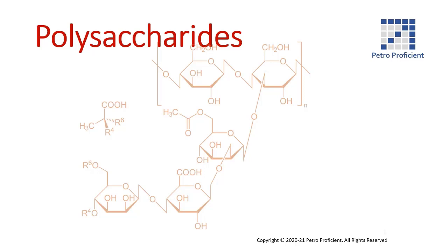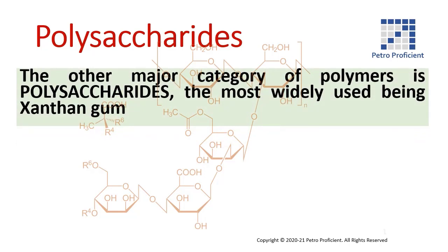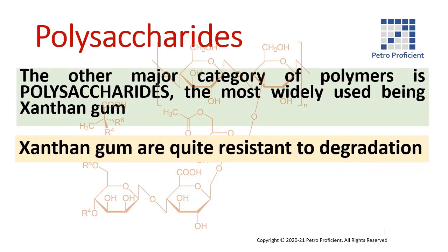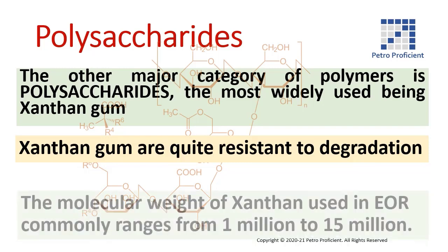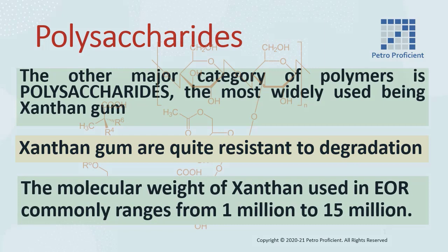The other major category of polymers is polysaccharides. The most widely used is xanthan gum. Xanthan gum is quite resistant to degradation. The molecular weight of xanthan used in EOR commonly ranges from 1 million to 15 million.